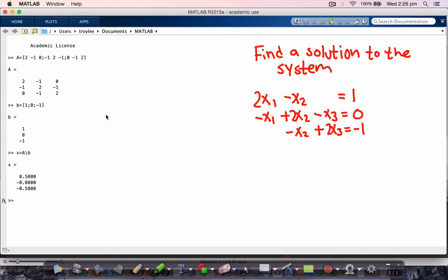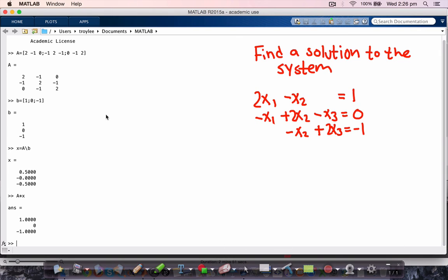Okay, so that says 1, half, 0, minus 1, so let's check if that's indeed correct. So A times X is indeed what we wanted: 1, 0, minus 1.